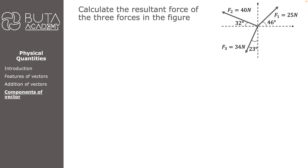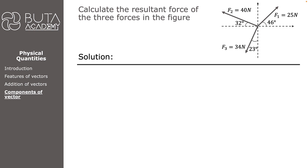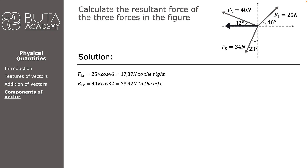We are given three vectors and asked to calculate their resultant. This time we will start straight away by calculating components. First, let's calculate all horizontal components. F1x equals 25 times cosine 46, which is 17.37 N to the right. F2x equals 40 times cosine 32, which is 33.92 N to the left. F3x equals 34 times sine 23, which is 13.28 N to the left. As you notice, for F3x we used sine instead of cosine, because F3x is opposite — not adjacent — to the angle of 23 degrees.